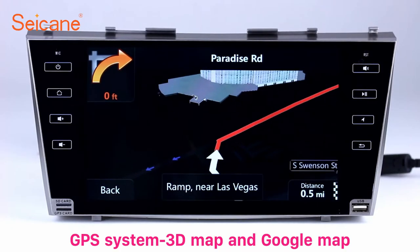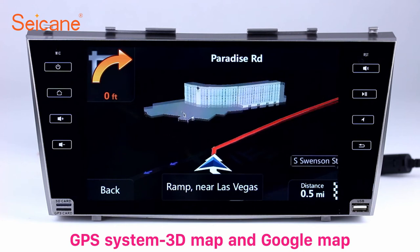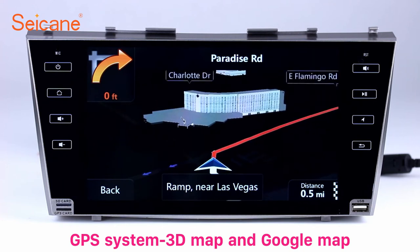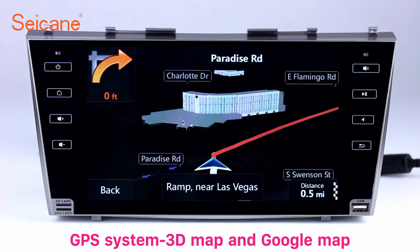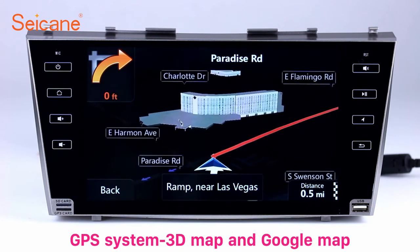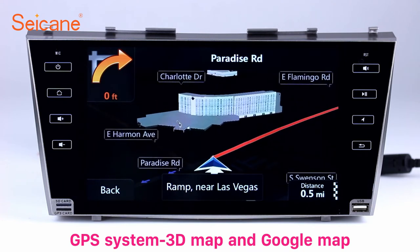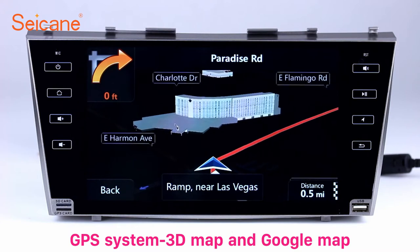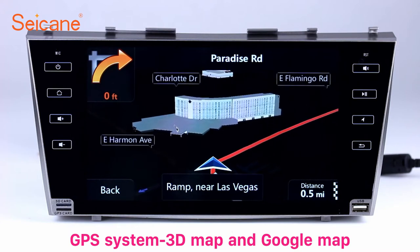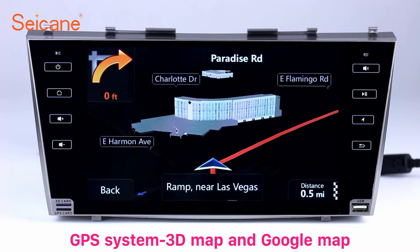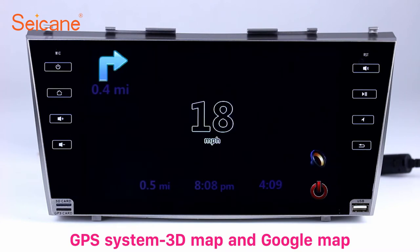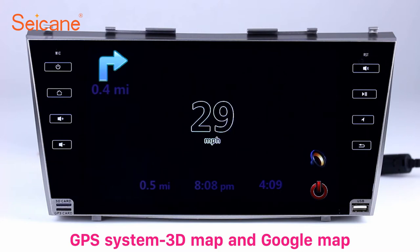GPS. Go to the main menu and open the GPS system. The 3D navigation map shows you accurate GPS locations and route information. It also supports Google Map. You will never get lost with this function.